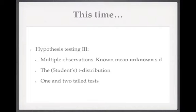This time we're on to hypothesis testing 3. We've again got multiple observations, but this time the population under the null hypothesis has a known mean but an unknown standard deviation. This is going to lead us to consider the student's t-test and the student's t-distribution, and we're also going to think about what a one and a two-sided or tailed test is.